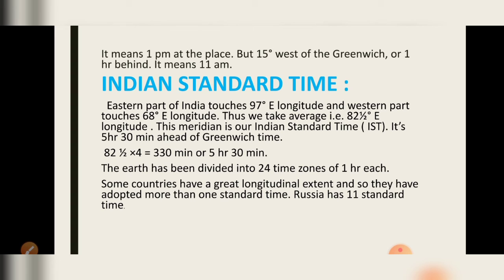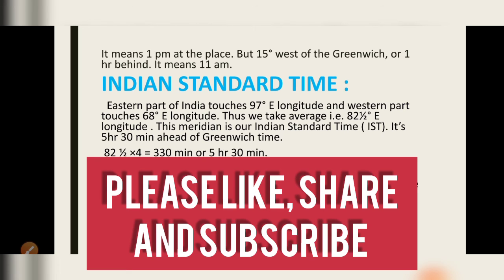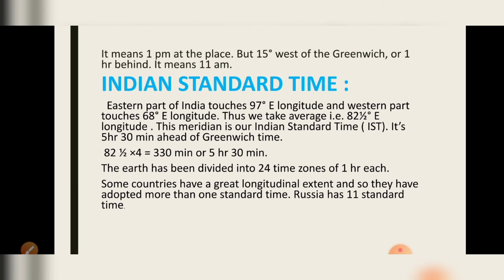Likewise, places west of Greenwich will have 1 hour behind, meaning 11 am. To summarize: if it is 12 pm at Greenwich, places 15 degrees east will have 1 pm, and places 15 degrees west will be 1 hour behind — meaning 11 am.